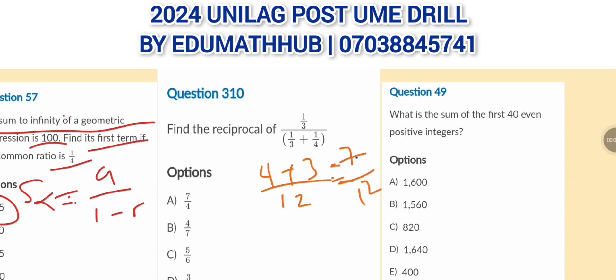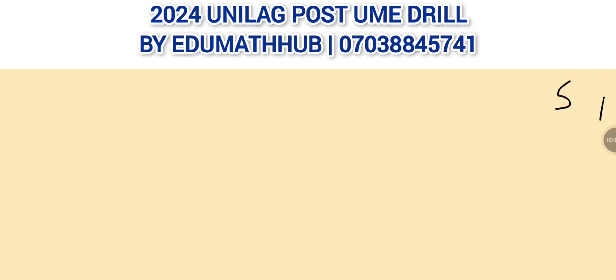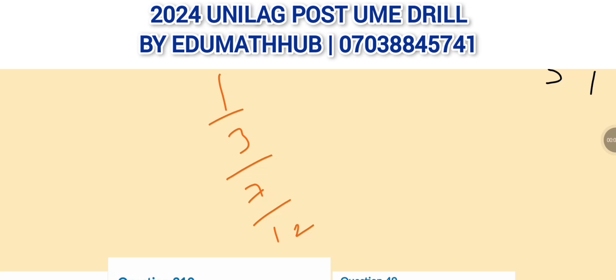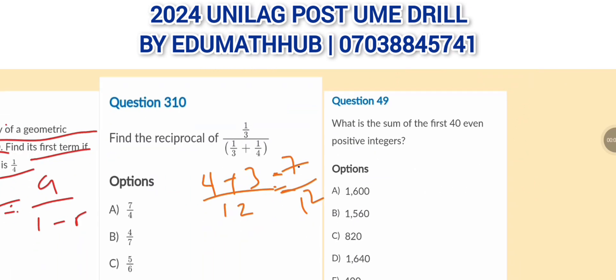The denominator is 7/12 and the top is 1/3, so we have 1/3 divided by 7/12. Change divide to multiply and flip: 1/3 times 12/7. Simplify: 3 goes into 12 four times, giving 4 over 7. The reciprocal of 4/7 is 7/4. Go to the options and select 7/4.